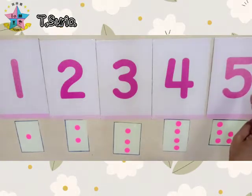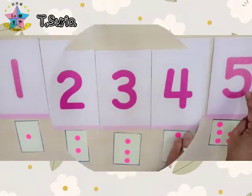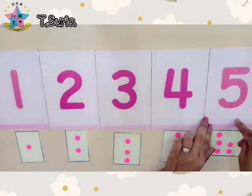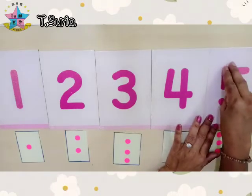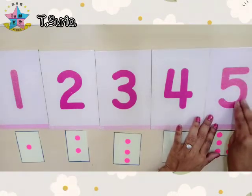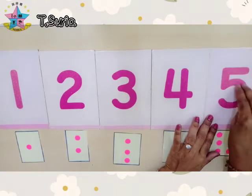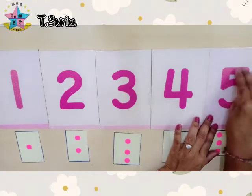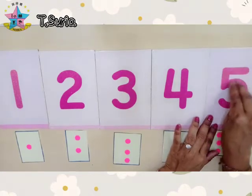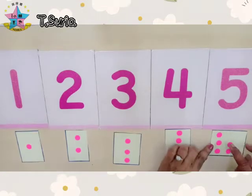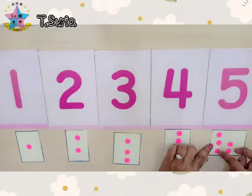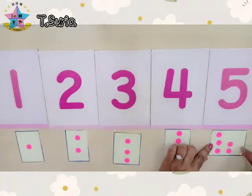What number is this? This is number five. Take your two fingers and trace number five. Five, five, five. Let's count the object. One, two, three, four, five.